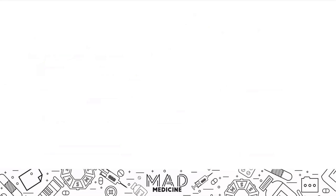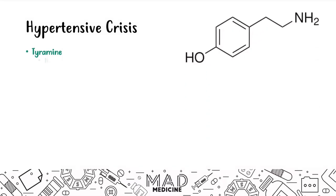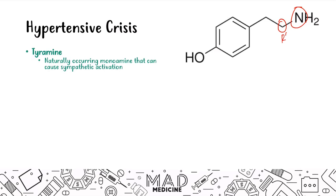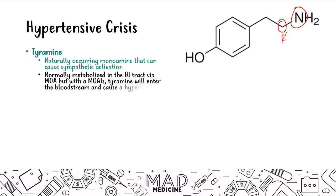Tyramine is a naturally occurring monoamine that causes sympathetic activation. Normally, gut metabolism inactivates tyramine because you have monoamine oxidases in your gut. When you take an MAOI, you inhibit those monoamine oxidases, leading to increased tyramine entering the bloodstream and causing a hypertensive crisis via stimulation of the sympathetic nervous system.